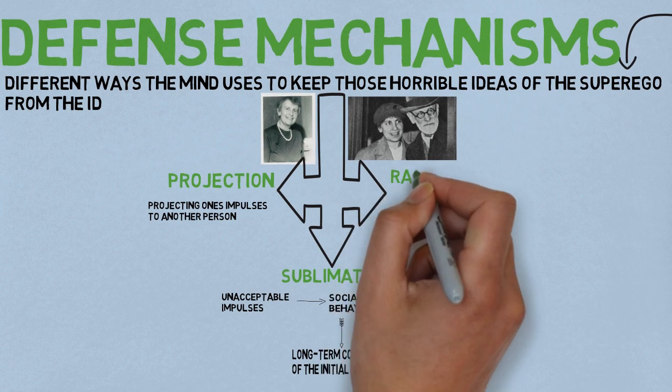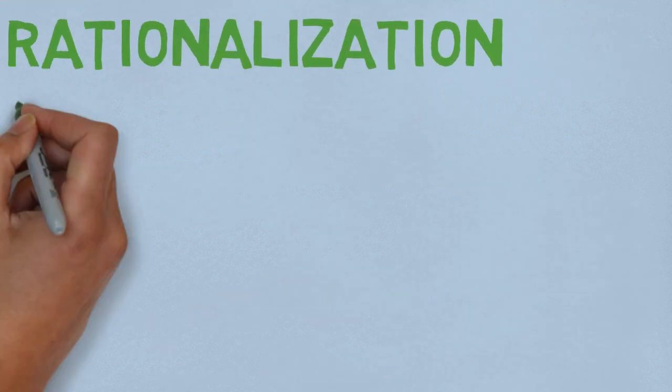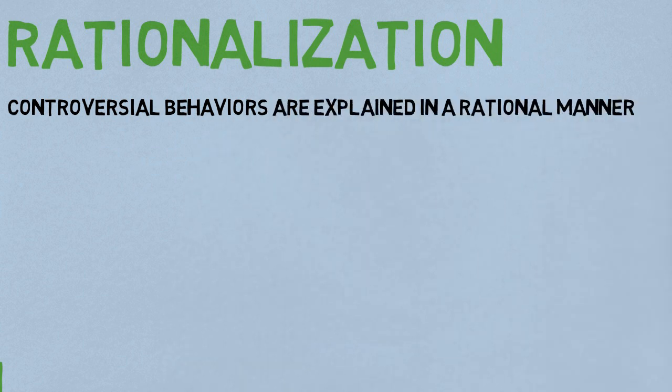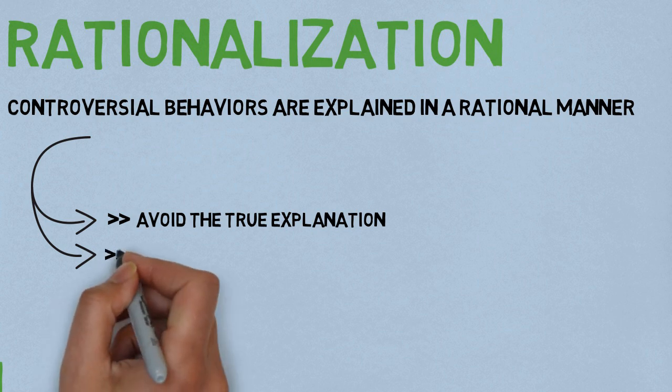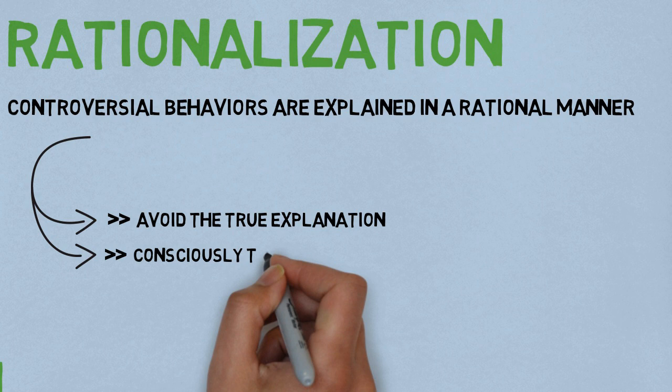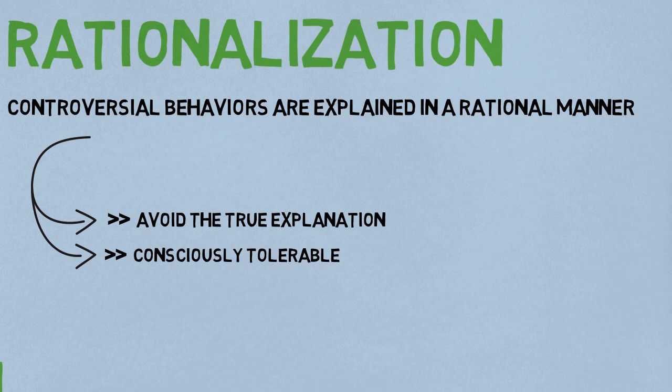Another one is rationalization, which is a defense mechanism in which controversial behaviors or feelings are justified and explained in a seemingly rational or logical manner to avoid the true explanation and are made consciously tolerable, or even admirable, by plausible means. More simply, when you do something or think something bad, you rationalize it and give it a more socially acceptable explanation.